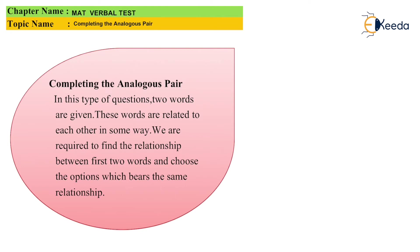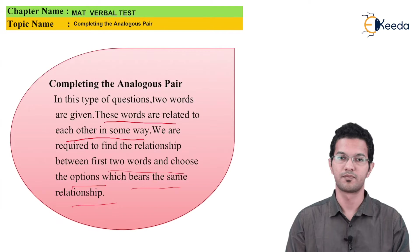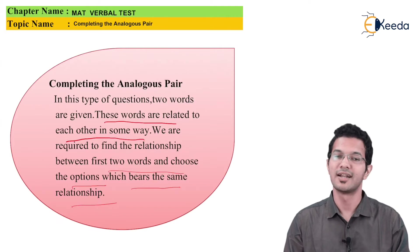The definition says that in these types of questions, two words are given. The words are related to each other in some or the other way. We are required to find the relationship between the two words and choose the option which bears the same relationship. So students, let us start with the MCQs.